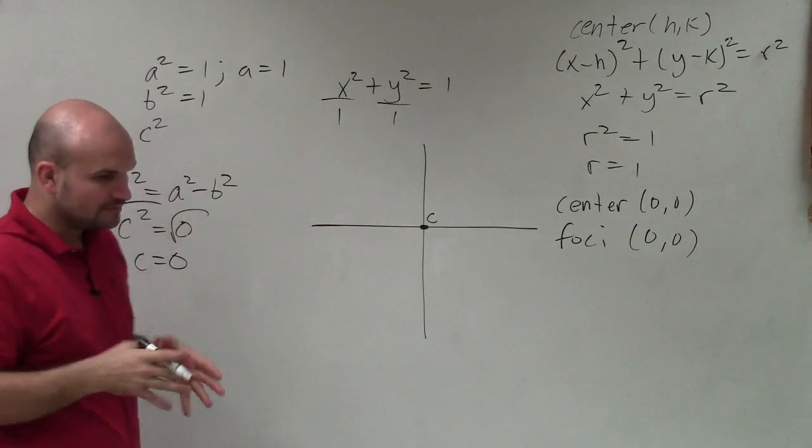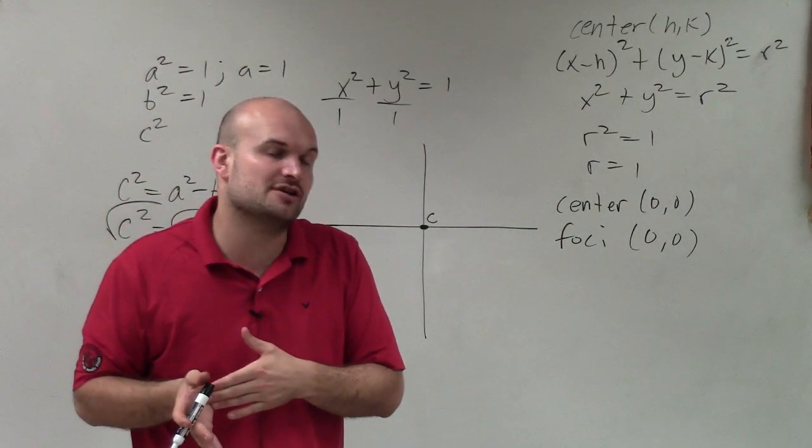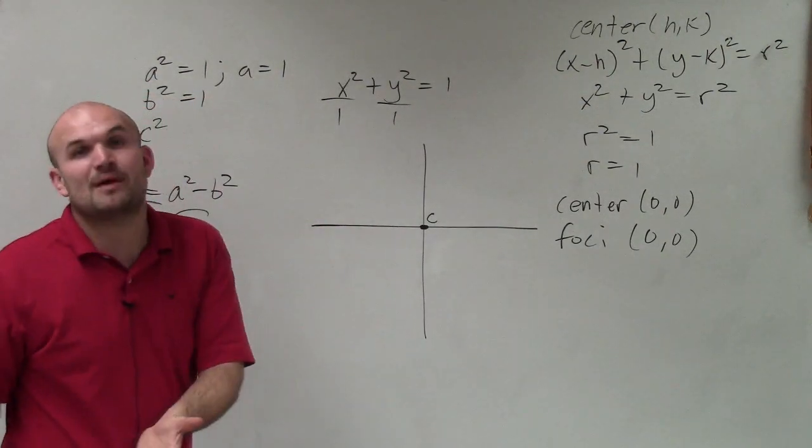So what we need to do, purposefully for ellipses, we like to determine, are we going to be adding or subtracting vertices left, right, or up and down? Well, because the a represents the major axis.